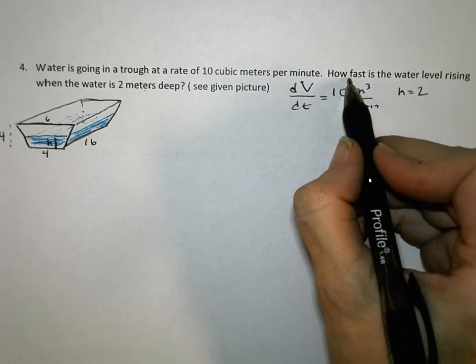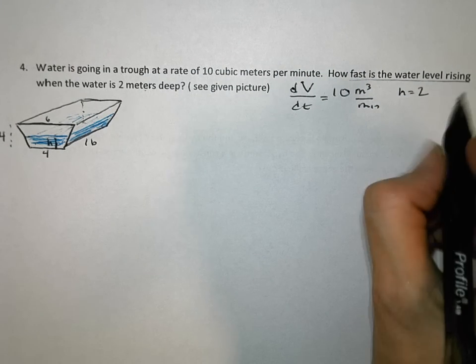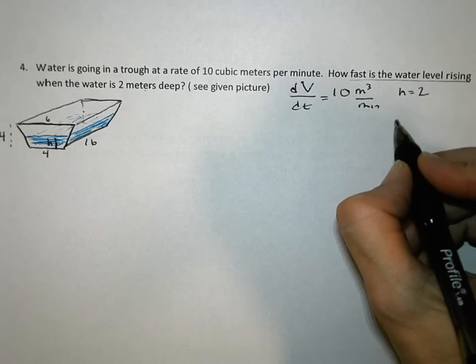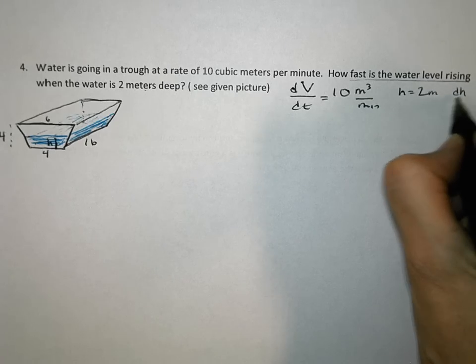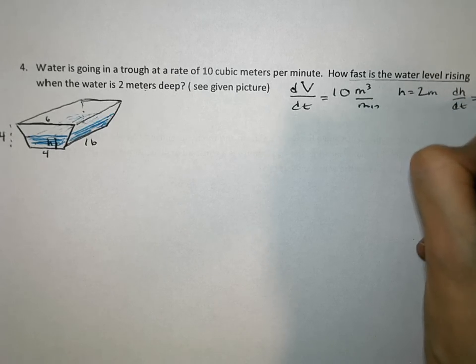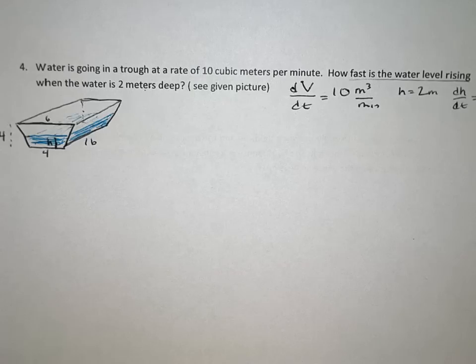And they're asking me, how fast is the water level rising? So they want to know how fast that h is changing. And so I would say dh/dt equals question mark. That's what they want to know. Since the water level is rising, I'm expecting a positive answer, because the height is getting bigger and the water is rising.